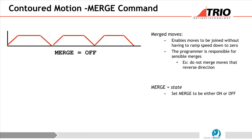This is for contoured move - the MERGE command. MERGE enables moves to be joined without having to ramp speed down to zero. If you have a move without the merge on but you want to do a continuous move, what will happen is it will ramp up and then it will ramp down, then it will continue - so you will have a disjointed move. If you have the merge on, you have a continuous move. The program is responsible for sensible merge - do not merge moves that are in reverse direction.